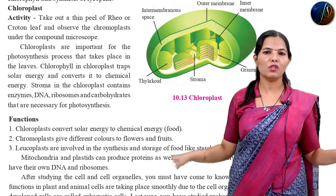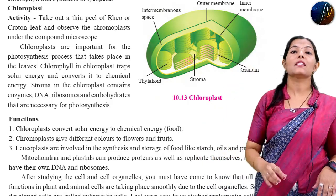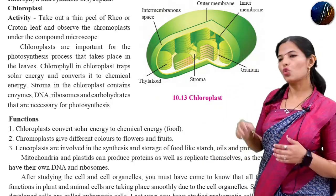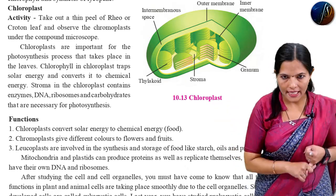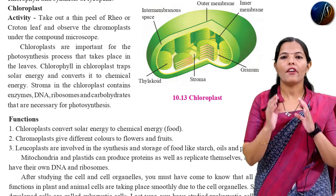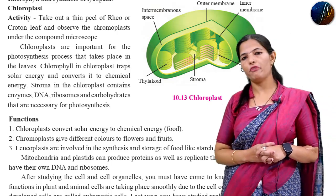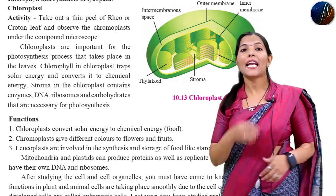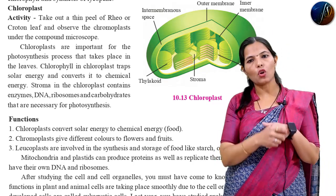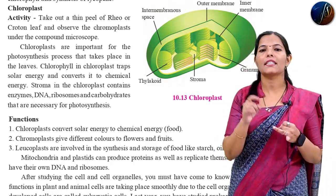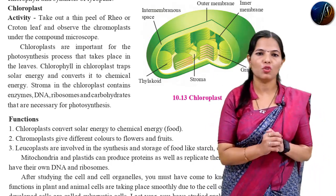The next one is stroma. The stroma in chloroplast contains a matrix. The matrix present contains enzymes, DNA, ribosomes, and carbohydrates that are necessary for the process of photosynthesis. Stroma in chloroplast contains carbohydrates, ribosomes, DNA, and enzymes which are required for the process of photosynthesis.